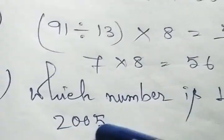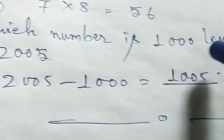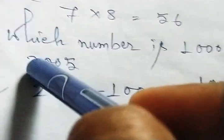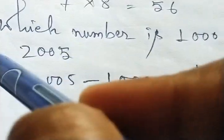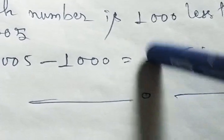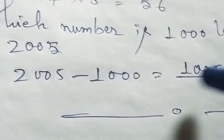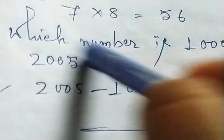Which number is 1000 less than 2005? So 2005 subtract 1000, answer will be 1005. So for this class, up to this portion.